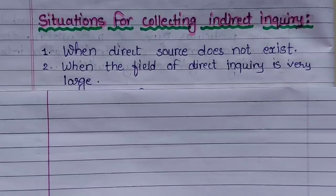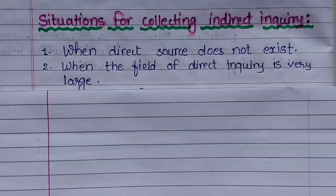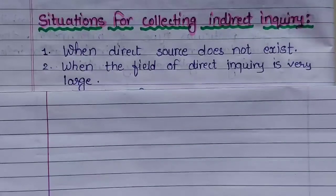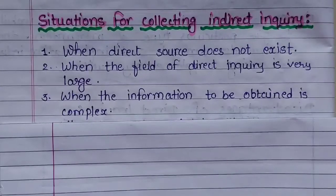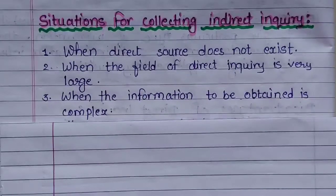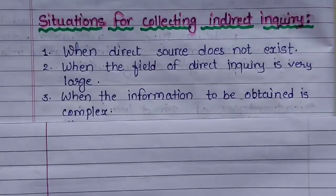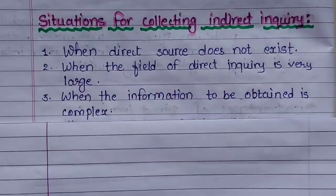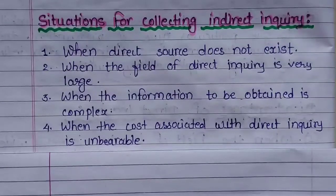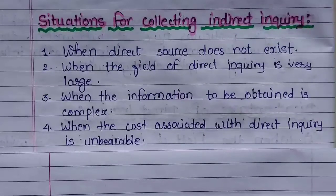Second: when the field of direct inquiry is very large — if the inquiry field is quite large, it will consume a lot of time and require appointing many enumerators, making it very expensive. Third: when the information to be obtained is complex — when the information is complex or difficult to extract, indirect inquiry is more helpful. Fourth: when the cost associated with direct inquiry is unbearable — when the cost of direct inquiry becomes very high, indirect inquiry is more helpful in such cases.